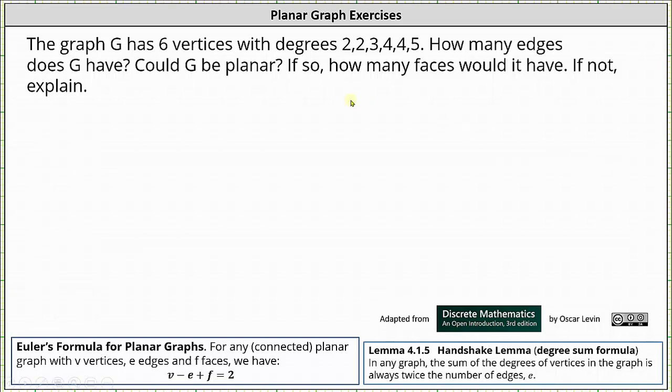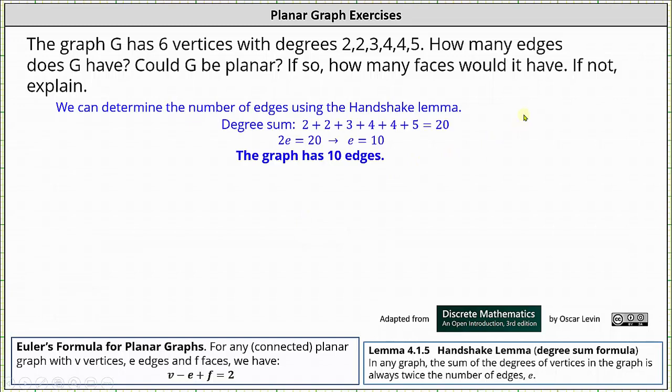To begin, we can determine the number of edges using the handshake lemma, which states in any graph the sum of the degrees of vertices in the graph is always twice the number of edges E. In our case, notice the degree sum is 20, which gives us the equation 2E equals 20, indicating E equals 10. The graph has 10 edges.